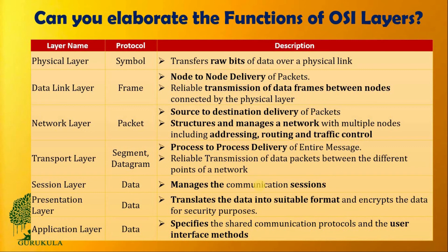The application layer specifies the communication protocol and also defines the user interface between the user and the system. This is the function associated with all seven layers of the OSI model.